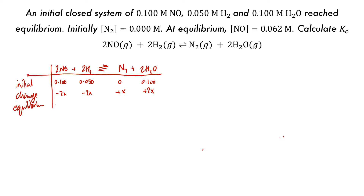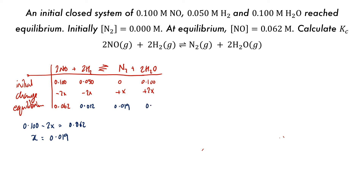We're told that at equilibrium the concentration of NO is 0.062, so we can calculate the value of X. We know the initial concentration of NO is 0.100, then minus 2X equals 0.062, which gives X equal to 0.019. We can then fill that into the table to calculate equilibrium values: H2 is 0.012 molar, N2 is 0.019, and H2O is 0.138.